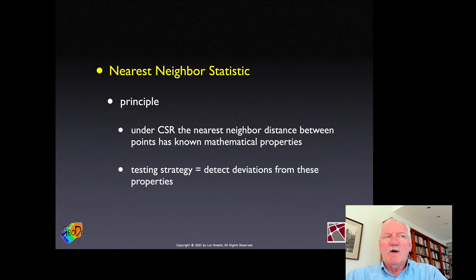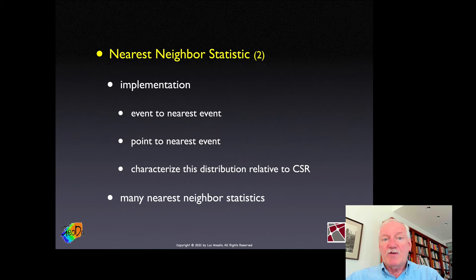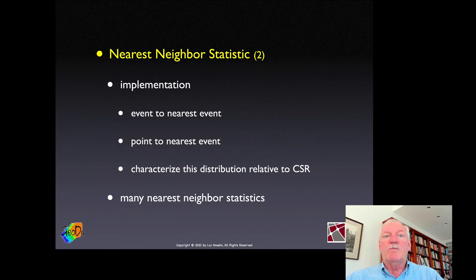Using the formal expression of the homogeneous planar Poisson process, we can calculate exactly the probability of not having any point in that radius. The complement is the probability of having a nearest neighbor. So under CSR — complete spatial randomness — the nearest neighbor distance has known mathematical properties. We build tests that detect deviations, either taking the distance from an event to the nearest event, or the distance from a reference point to the nearest event.